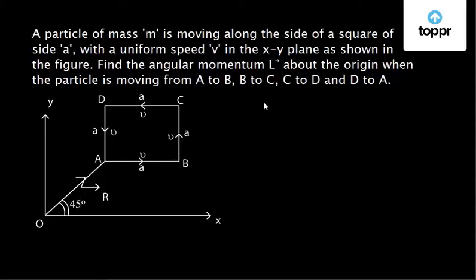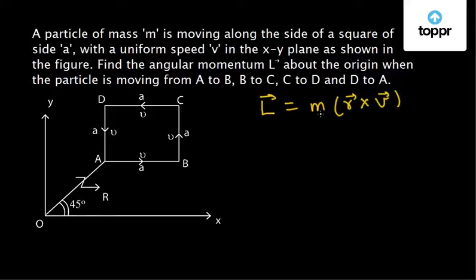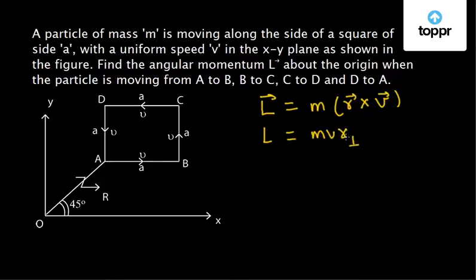The angular momentum of the particle of mass m is given by L = m(r × v), where m is the mass of the particle, r is the distance of the particle from the origin or reference, and v is the velocity of the particle. The magnitude of the angular momentum L can be written as m·v·r_perp, where r_perp is the perpendicular distance of the particle from the origin.